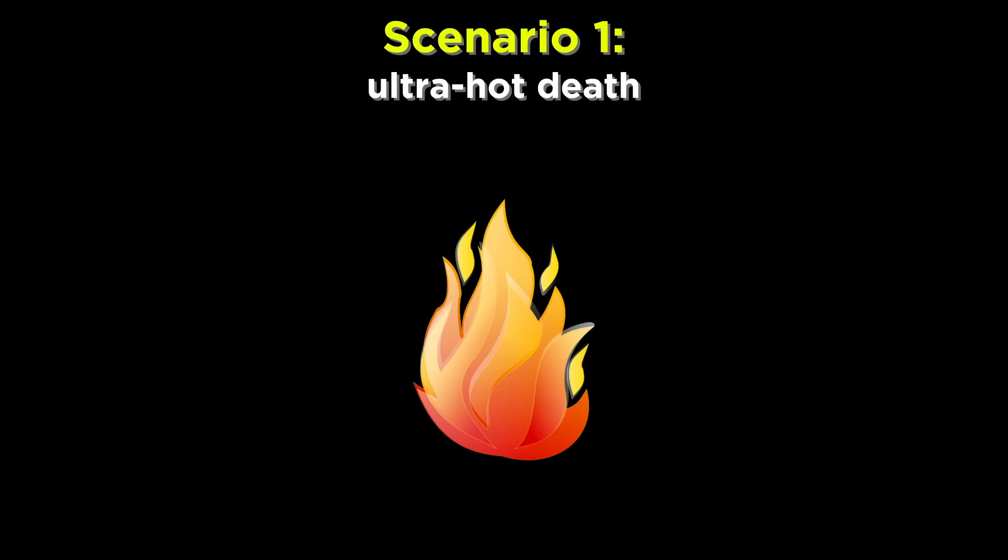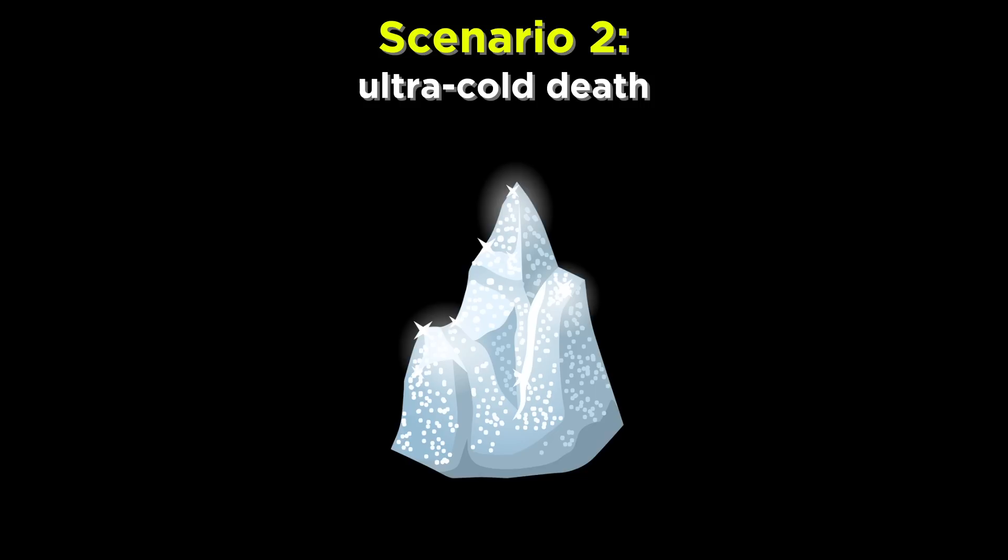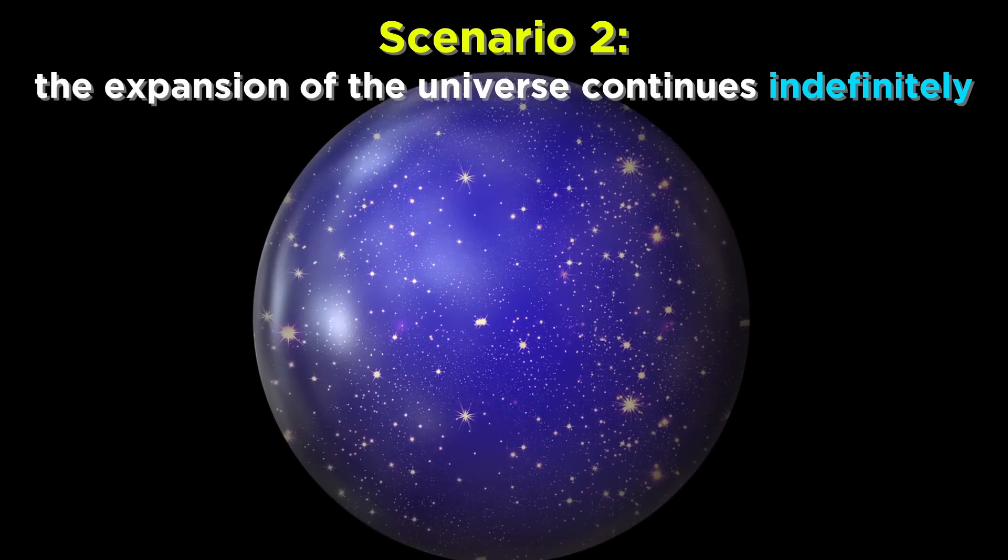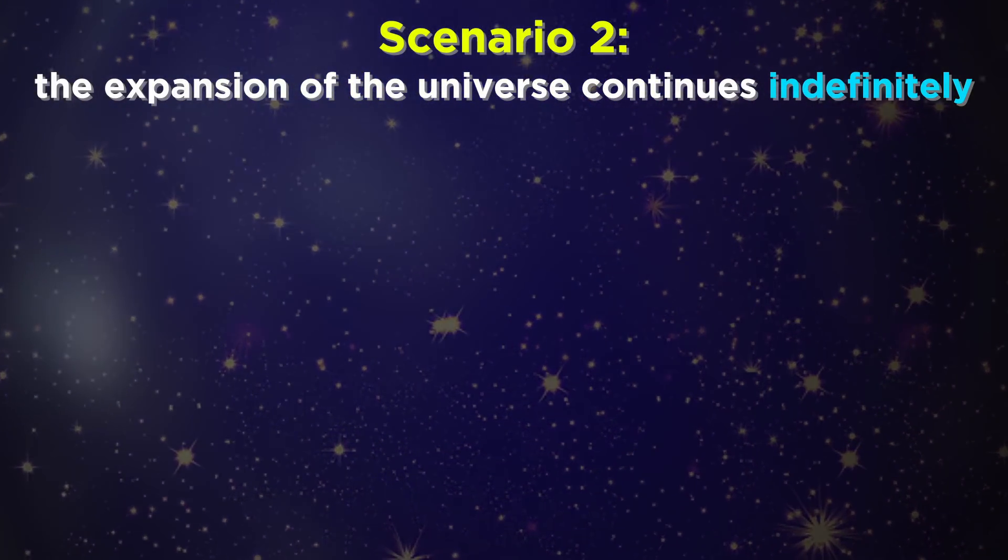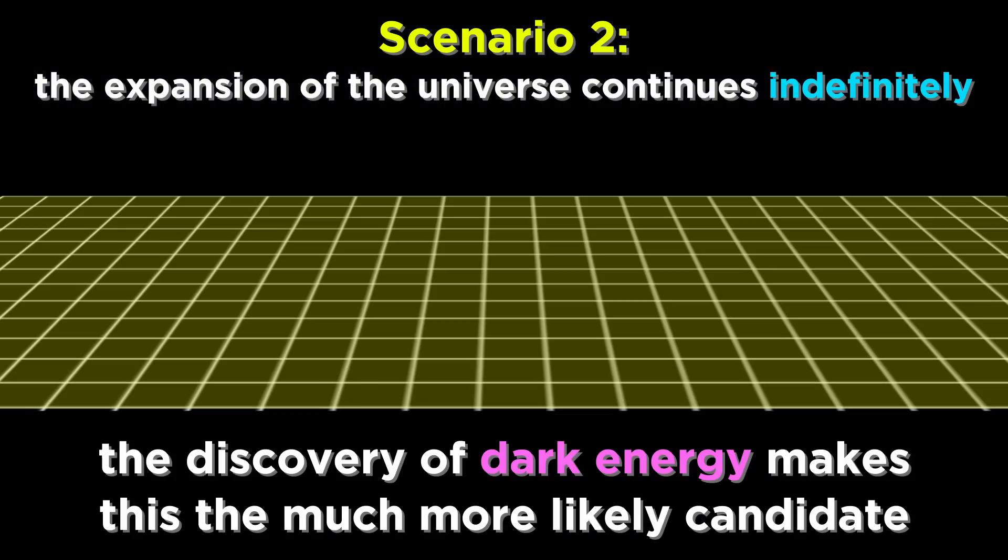So what is the other option? If not an ultra-hot, compact death, we could be dealing with an ultra-cold death. Instead of the expansion turning into contraction, the expansion could continue indefinitely. Due to the acceleration of the expansion that we measure today, which has been happening since dark energy began to outweigh gravitational influence a few billion years ago, this does seem more likely than the alternative.